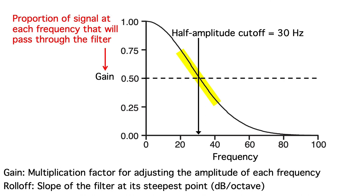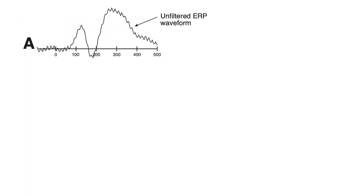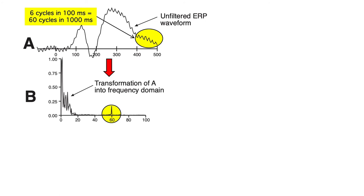Now let's see exactly how the frequency response function can be combined with the Fourier transform to actually implement filtering. Here's an ERP waveform that's contaminated with 60 Hz noise. If you counted, you'd see 6 peaks in a 100 ms period, which means that there are 60 cycles per second. Our first step in filtering is to use Fourier analysis to transform the waveform into the frequency domain. You can see the high level of 60 Hz activity in the transform.